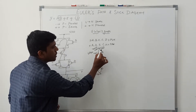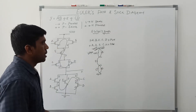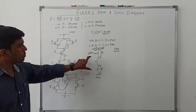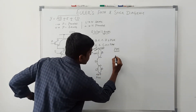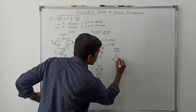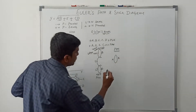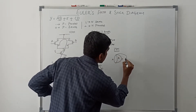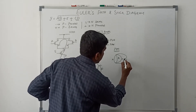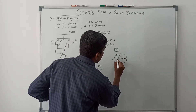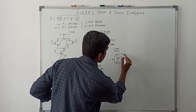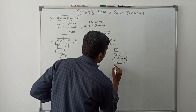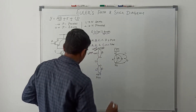Next, I draw the pull-down network Euler's graph. In this pull-down network, follow the same order: A, B, E, C, and D. This side connects to the output and this side connects to VSS — the ground point. This is the simple diagram for the Euler's graph for both networks.